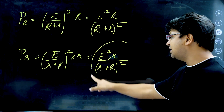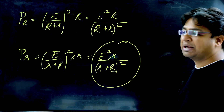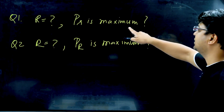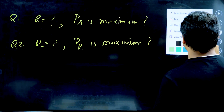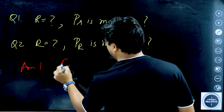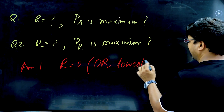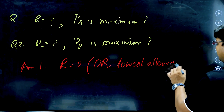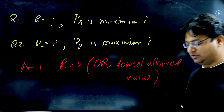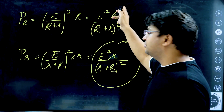Now, for P_r, capital R only appears in the denominator. So if I want to get a maximum of P_r and I can alter capital R, I should choose capital R as zero — or the lowest allowed value if zero resistance is not physically possible. So the answer to the first question is: R = 0 (or the lowest allowed value).